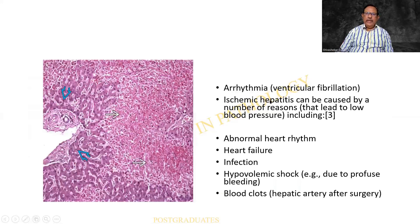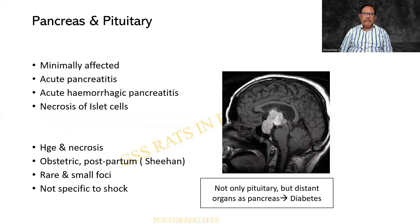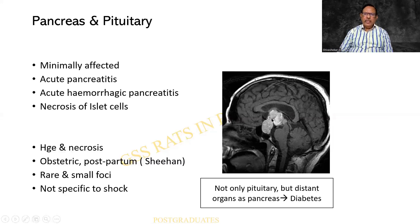There can be arrhythmia or ischemic hepatitis predisposing to this. Abnormal heart rhythm, heart failure, and infection can also predispose. The patient can develop hypovolemic shock, and blood clots in the hepatic artery can be identified at surgery or autopsy. Pancreas and pituitary are two organs which are minimally affected. There can be acute pancreatitis or acute hemorrhagic pancreatitis, and necrosis of islet cells resulting in diabetes. The pituitary can have hemorrhage and necrosis — you would have heard of Sheehan's syndrome, though it is not specific to shock. There can be small foci of necrosis, and distal organs such as the pancreas are also affected, resulting in diabetes.